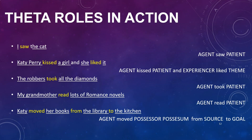Theta roles in action: in 'I saw the cat,' the verb 'saw' selects a noun phrase subject and object. The doer 'I' is the agent, and the object 'the cat' is the patient. 'Katy Perry kissed a girl and she liked it' — the agent is Katy Perry; the patient or experiencer is 'a girl.' In the second clause, 'she' receives the experiencer theta role and 'it' is the theme. 'The robbers took all the diamonds' — the robbers are the agent, the diamonds are the patient or theme. 'My grandmother read lots of romance novels' — grandmother is the agent, the novels are the patient.